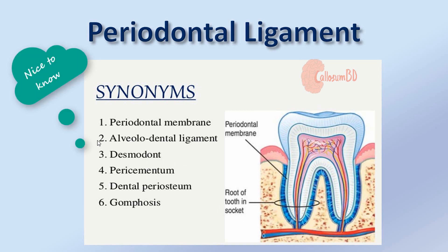The Periodontal Ligament is also known by several other names: periodontal membrane, alveolodental ligament, desmotone, pericimentum, dental periosteum, and gomphosis.